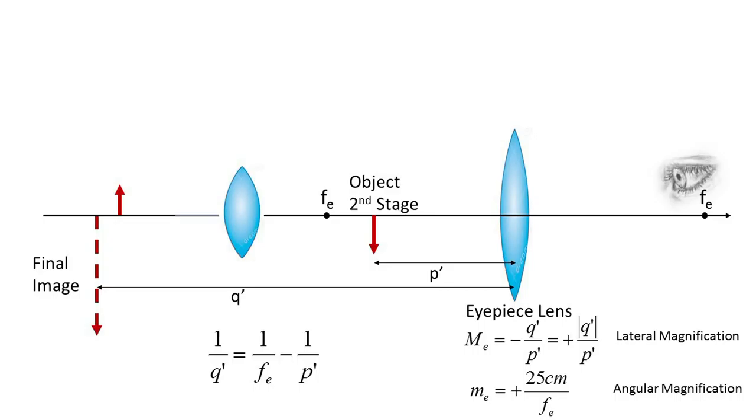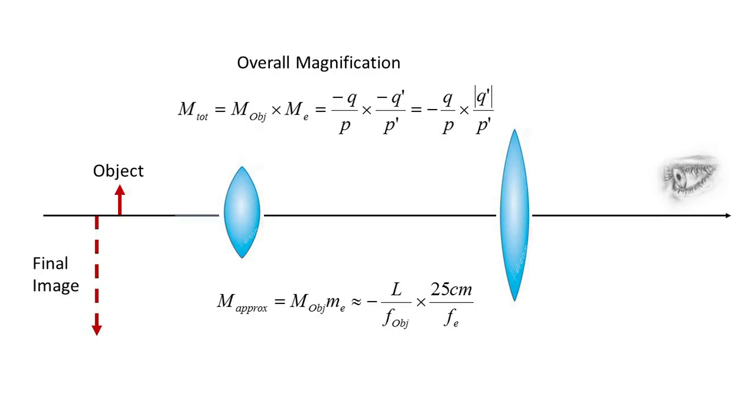Since Q prime is negative, i.e. the final image forms to the left of the eyepiece lens, the magnification of the second stage has an overall positive sign and the image maintains the inversion from the first stage. Microscopic images are generally seen inverted. Another way to estimate the magnification of the second stage is with the simple magnifier angular magnification of 25 centimeters divided by F-E for a relaxed eye, where 25 centimeters is the assumed normal near point of an eye.